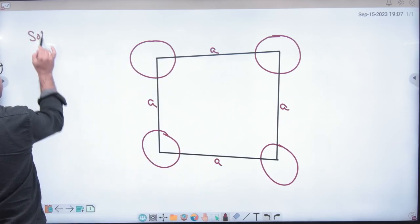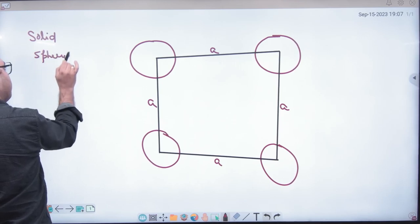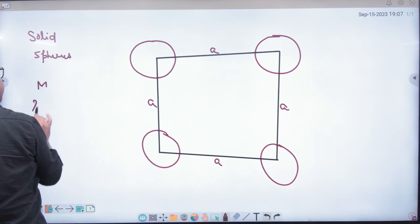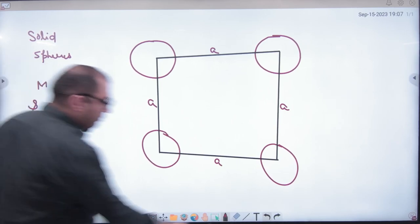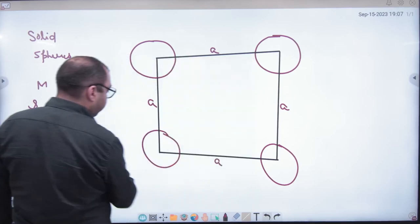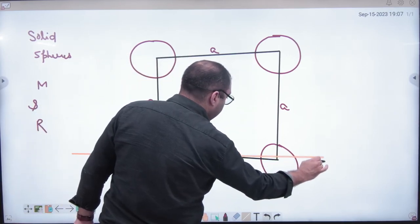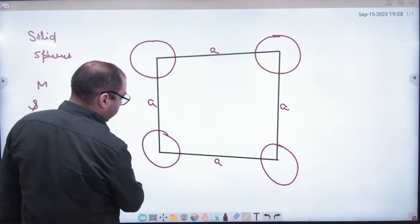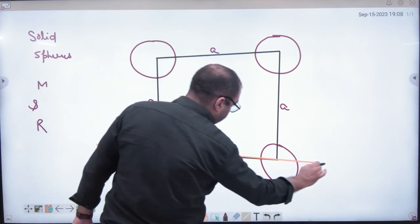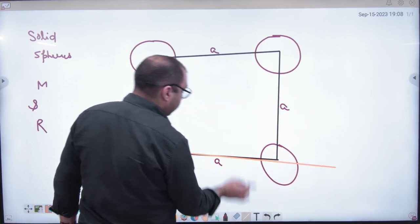Second example: all solid spheres of mass M and radius R. There are four spheres labeled A. The question is: what will be the total moment of inertia of all four spheres about the given axis?